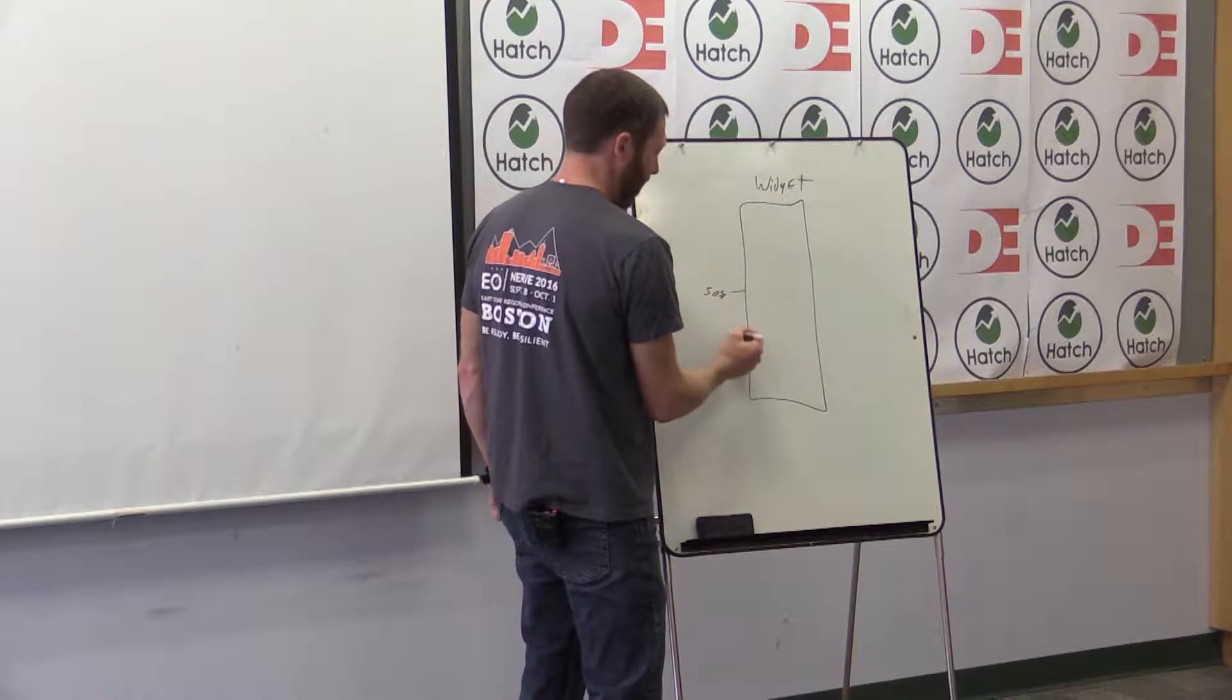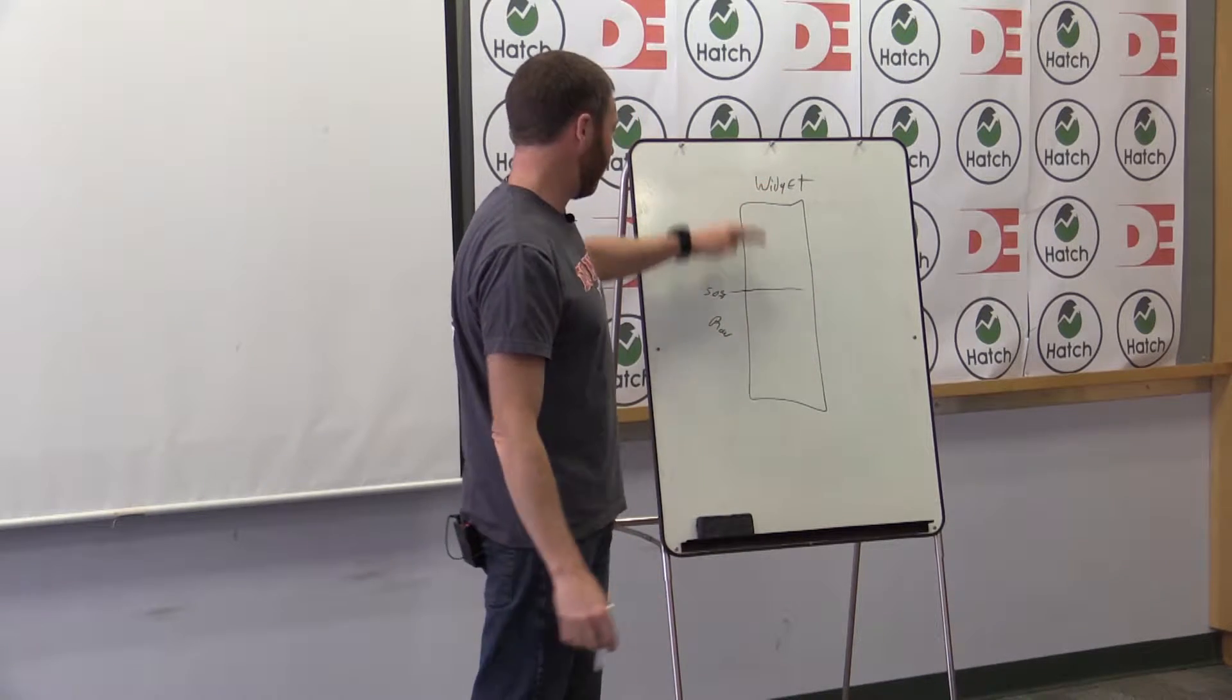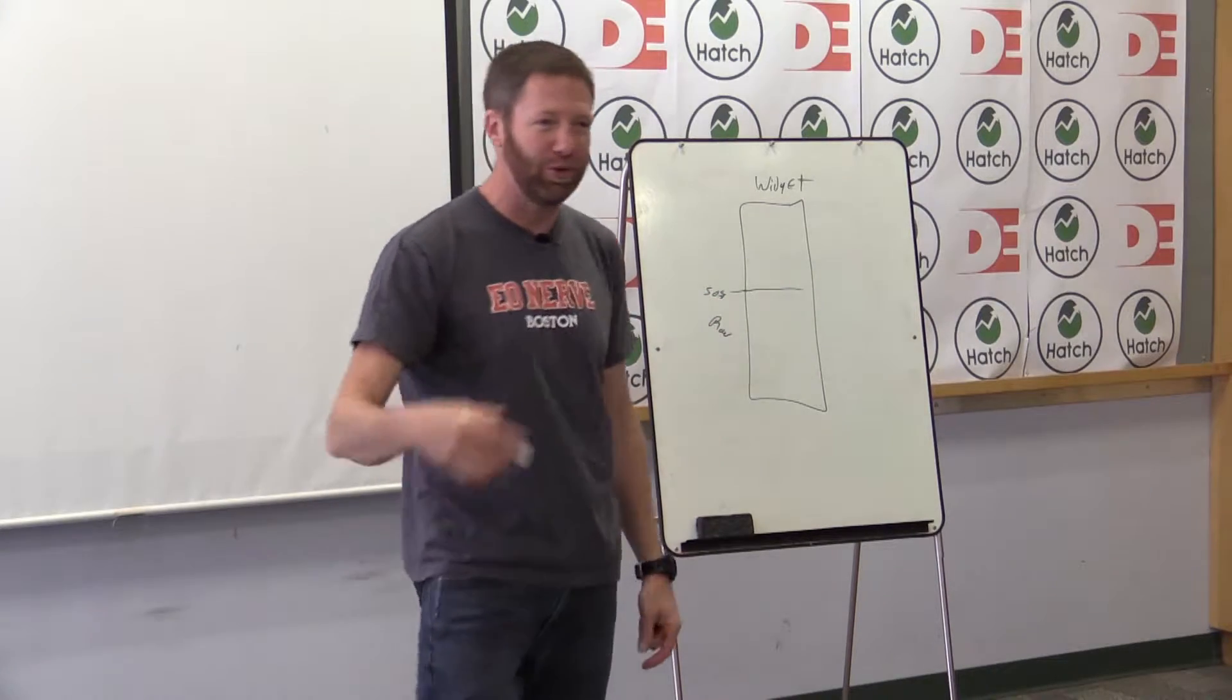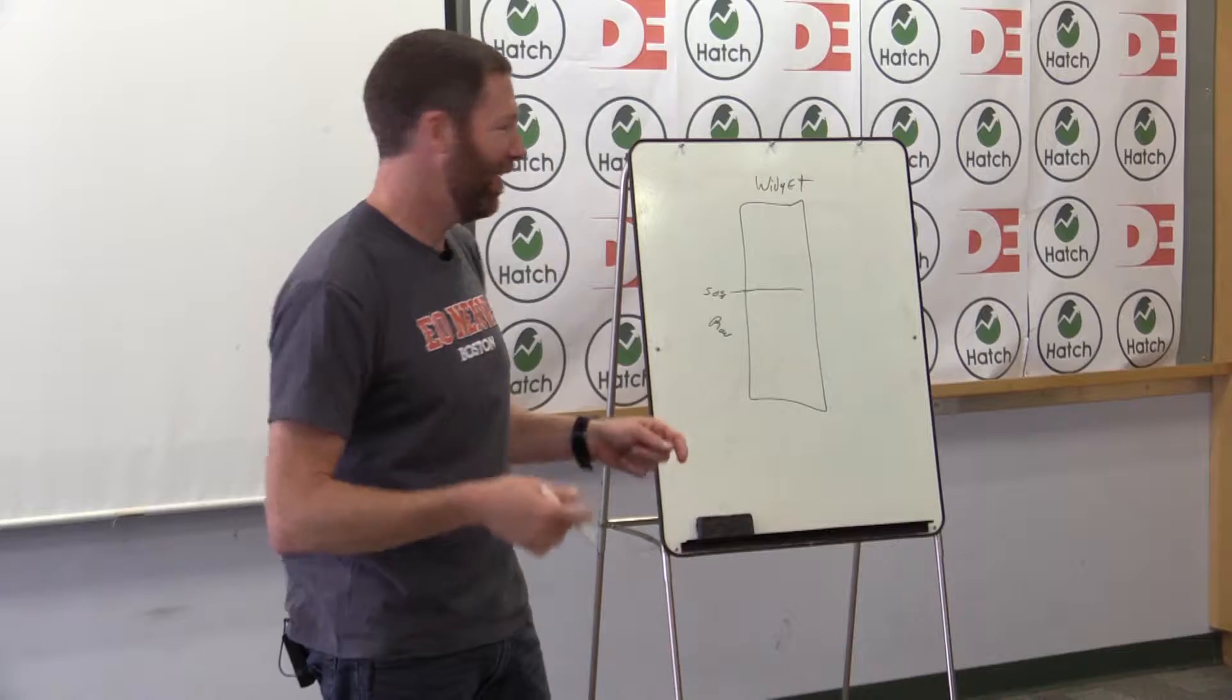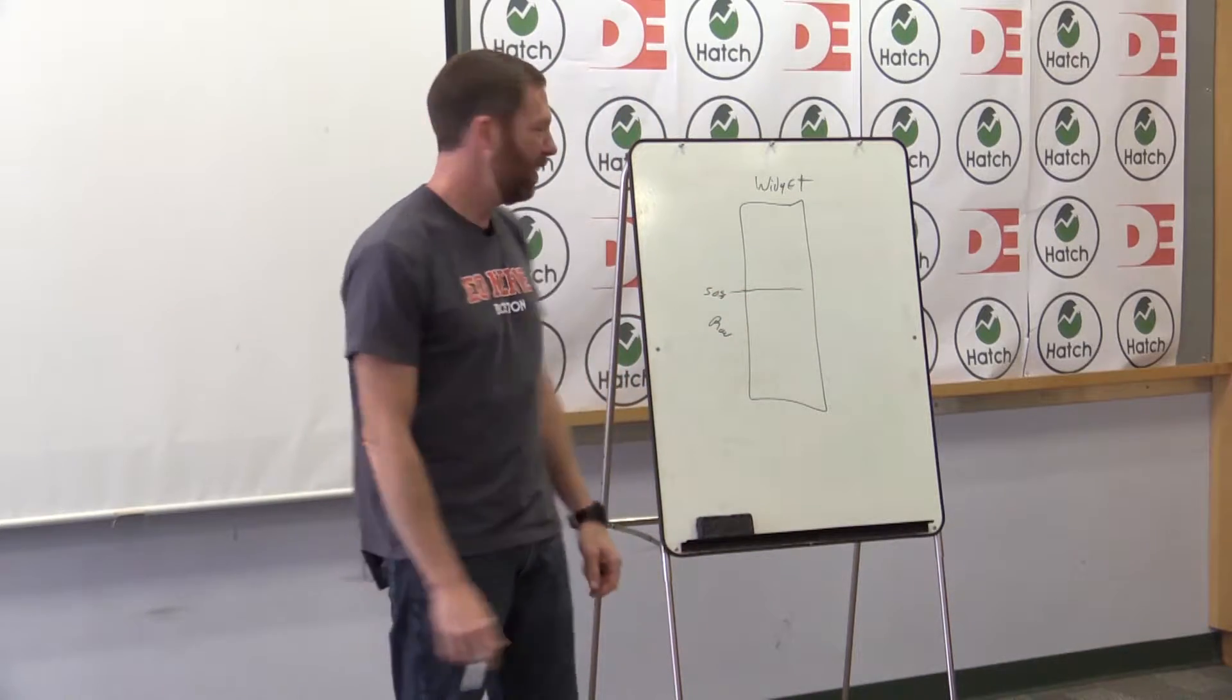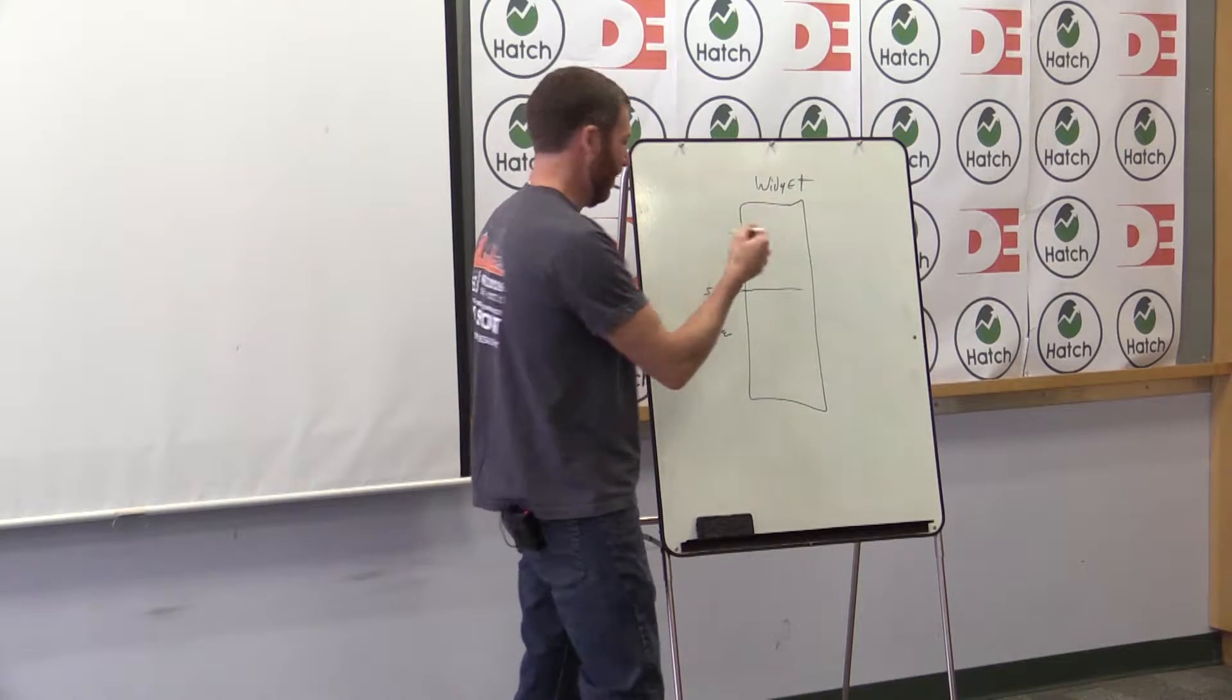Just for the sake of, 50% is raw. So raw materials, if you sell the widget for a dollar, 50 cents of that went into the underlying cost of goods sold, labor, cogs as they call it, the stuff that every single widget, no matter what you have, those expenses. I'm just going to use round numbers because I don't have Excel in front of me and I can't do math.